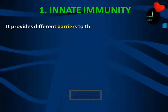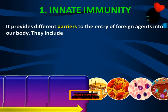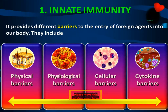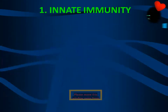Innate immunity provides different barriers to the entry of foreign agents into our body. These include physical barriers like skin; physiological barriers like enzymes; cellular barriers like macrophages; and cytokine barriers like interferon. These are all barriers of innate immunity.